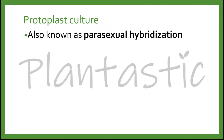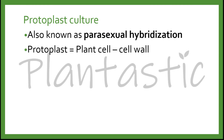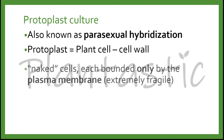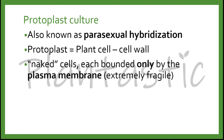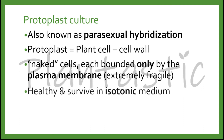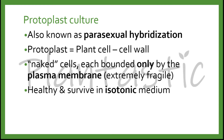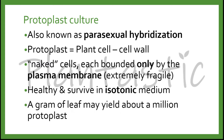Protoplast culture is also known as parasexual hybridization. A protoplast is a plant cell without the cell wall, also known as the naked cell, each bounded only by the plasma membrane, which is extremely fragile. It can only be healthy and survive in isotonic medium. A gram of leaf may yield about a million protoplasts.